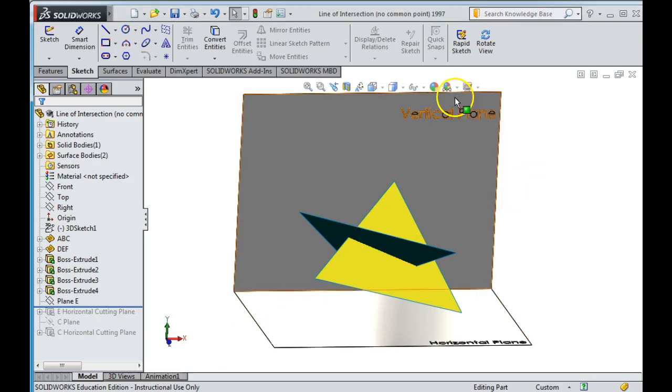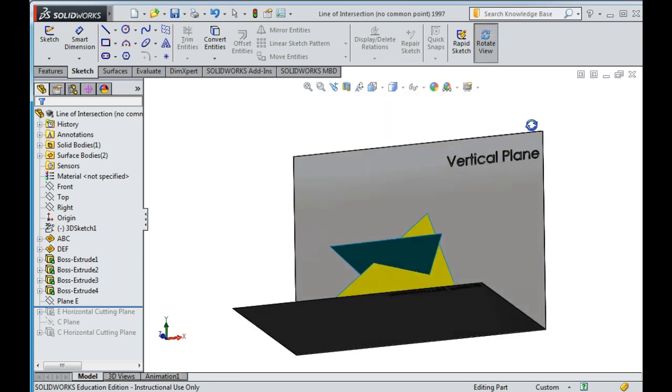The SolidWorks of this, if we look here, we have two planes here. We have a yellow plane and we have a blue plane.